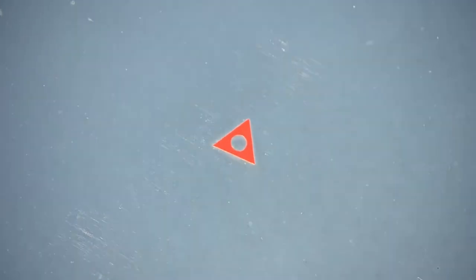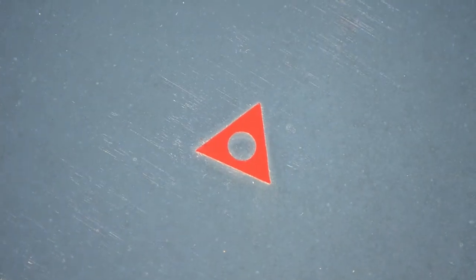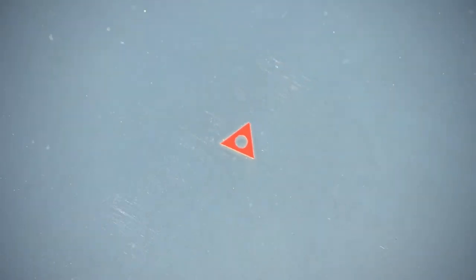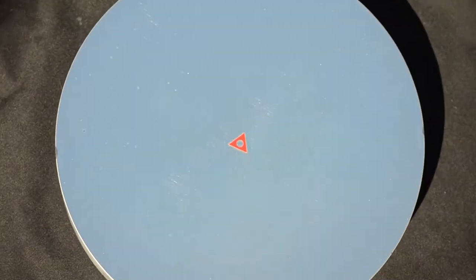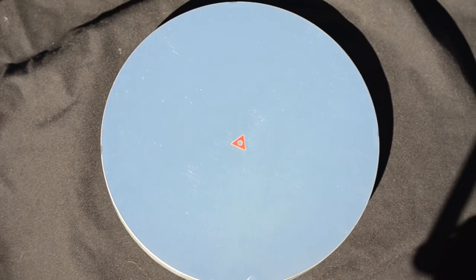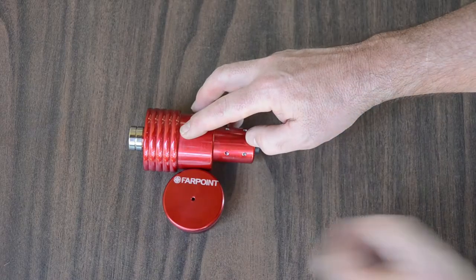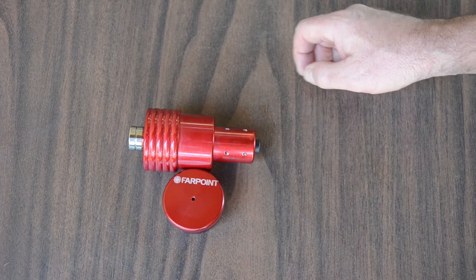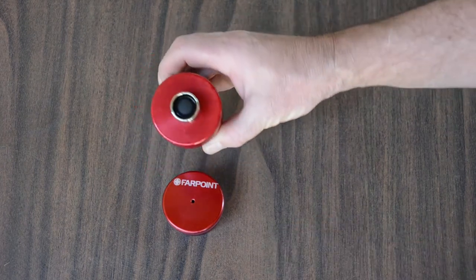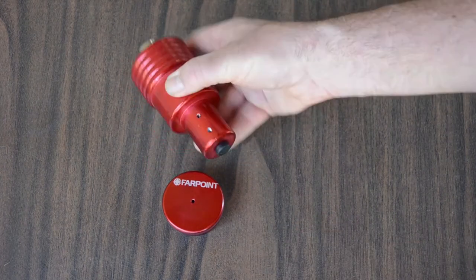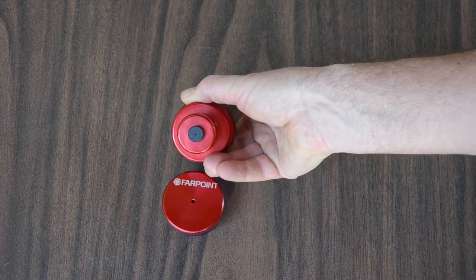The Farpoint Quick and Easy Field Collimation Method assumes that you have already center spotted your primary mirror. If you have not, go to the Farpoint Center Spot video to learn how to do this. We also assume that you have a well-collimated laser. Go to the Farpoint Laser Testing and Collimation Video to learn how to test your laser and collimate it if necessary.